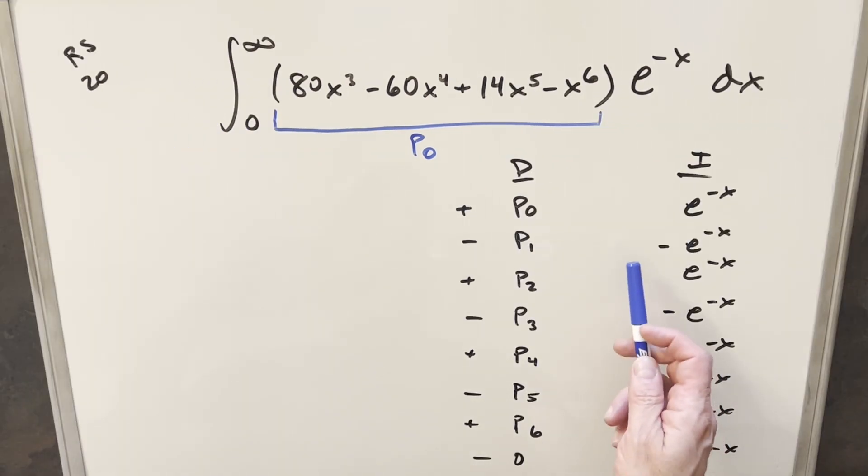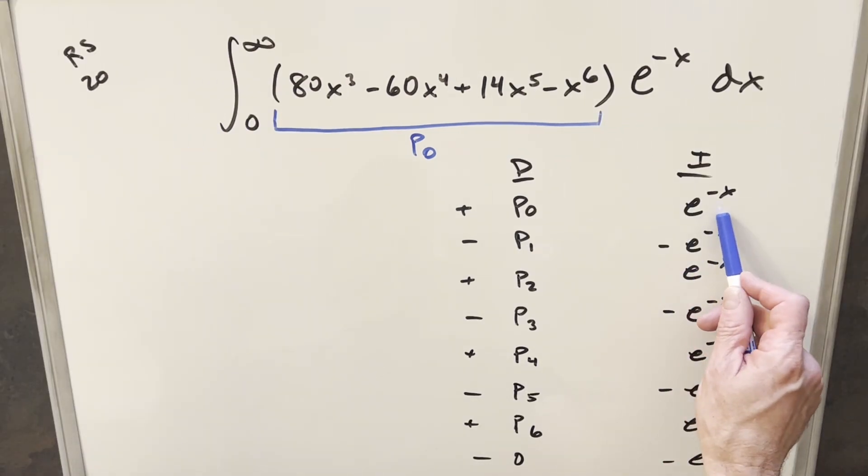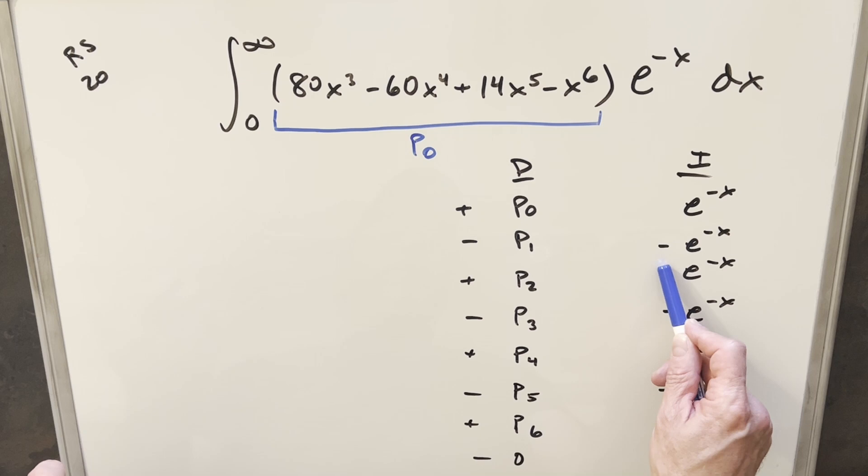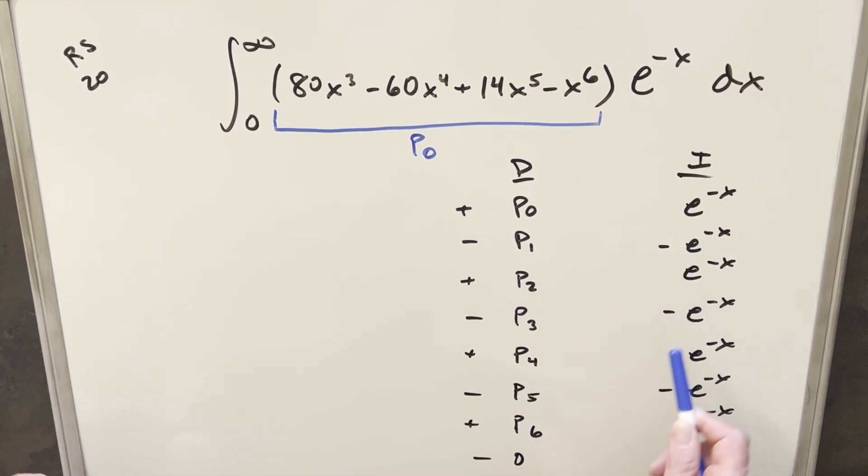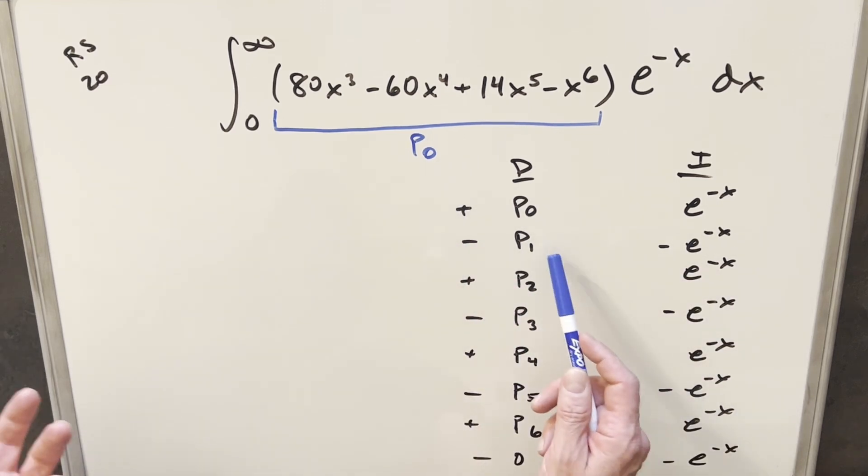So what we've done here in filling out our table, you'll notice when we integrate e^(-x), we just have a minus come out. And then when we do it again, the minus is cancelled and we're back to plus. So we have our sign just changing for every integral down here. Of course, with integration by parts, our sign to the left is just going to change like this. And then for all these P values, you notice when you differentiate a polynomial, you get back a polynomial.